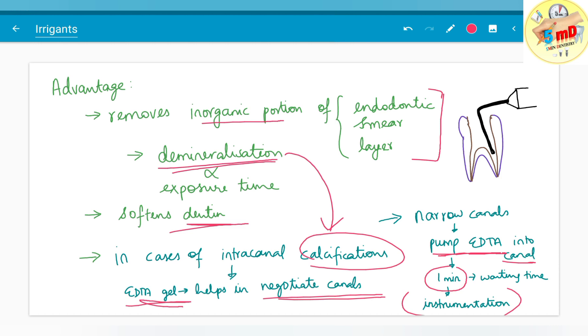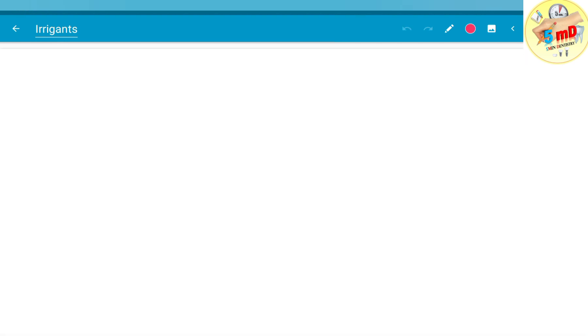So in this video we saw about EDTA and NaOCl as the most commonly used irrigant solutions. See you soon in the next video.